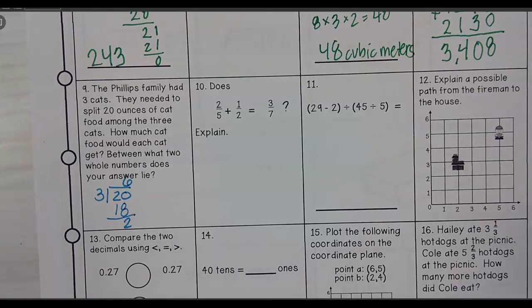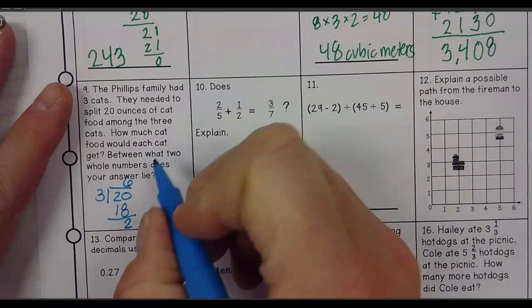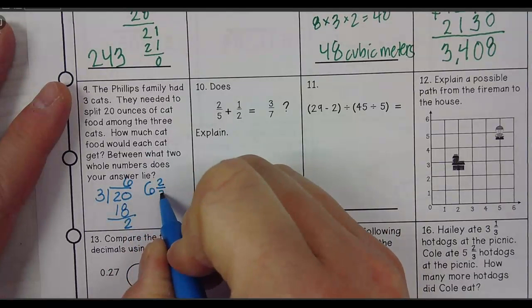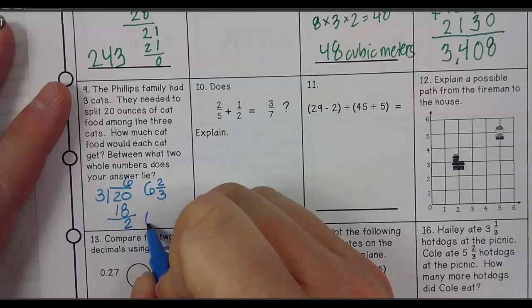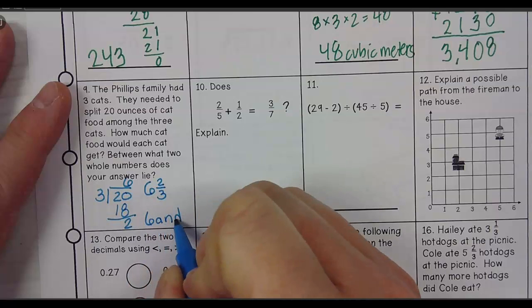So my 6 and 2 thirds is between which two numbers? 6 and 7. 6 and 7. Beautiful.